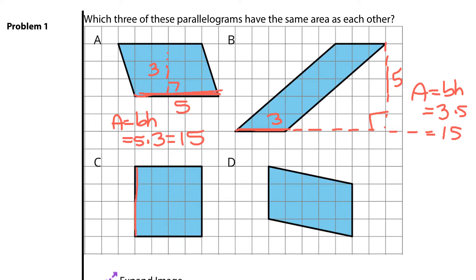Now this is a parallelogram even though it's a square, and our base and our height here are 4 each. Well, 4 times 4 this time is equal to 16. So it seems to be the right answer for the one that's not the same. But let's just make sure.